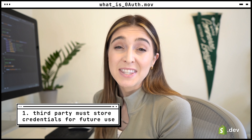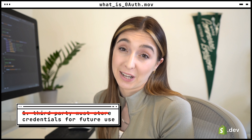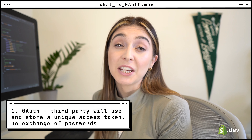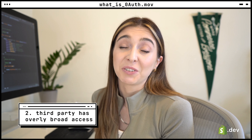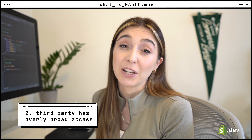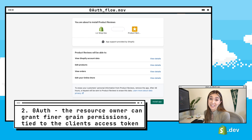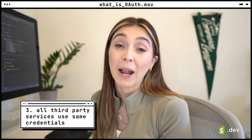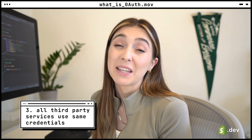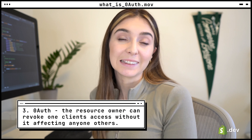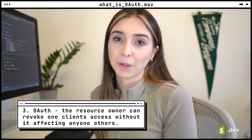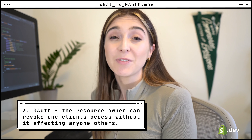Now let's think back to our original problems. Our first limitation without OAuth was that the third party would need to store the resource owner's credentials. By the design of OAuth, the client will store a unique access token — there's no exchange of passwords. The second limitation was the third party gaining overly broad access. With OAuth, the resource owner can grant finer permissions tied to the access token, so the client only has access to what it needs. Problem three was that revoking one third party's access meant revoking all of them. Now each third party client has its own unique access token, so the resource owner can revoke one client's access without affecting any others.